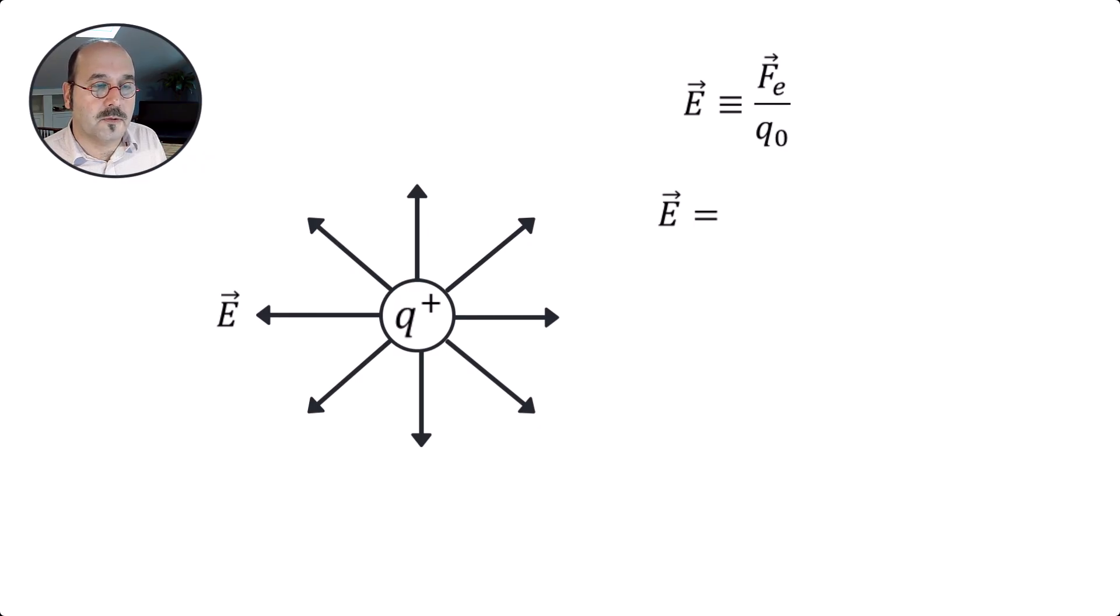The equation that we use for the electric field for a point source is going to be q, which is the charge in question, divided by a constant—it turns out it's a couple of constants: 4πε₀—and then one over r squared. I'm going to give it a direction of r̂.